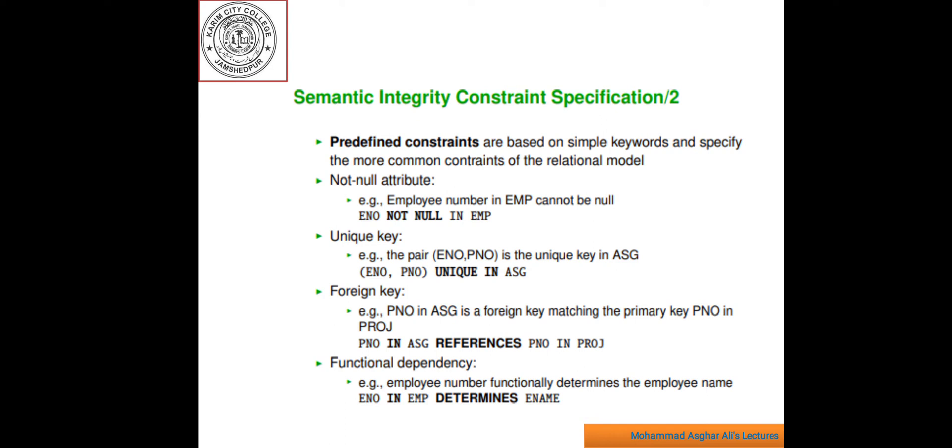For example, employee number in EMP cannot be null. Like this, ENO is not null in EMP. Unique key, for example, in pair, ENO, PNO is the unique key in ASG.